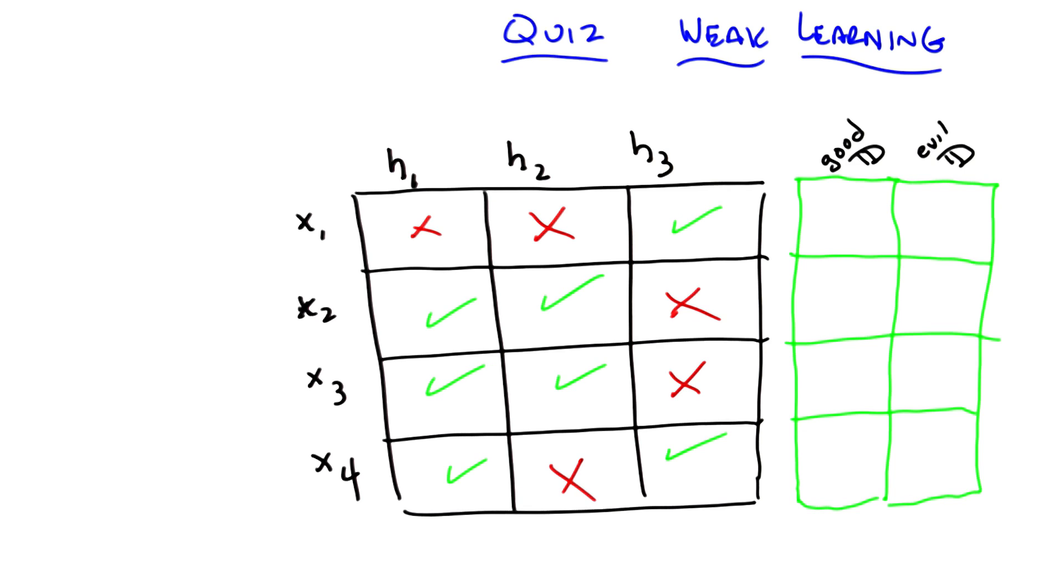I have an X in a square if that particular hypothesis does not get the correct label for that particular instance. And I have a green check mark if that particular hypothesis does in fact get the right label for that example.